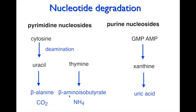Beta-amino isobutyrate can also be transaminated and converted to acetyl-CoA to enter the TCA cycle. Purines are where we're likely to get problems: if something drives the production of uric acid, there's a buildup in the joints, causing inflammation, pain, arthritis, and a condition called gout.